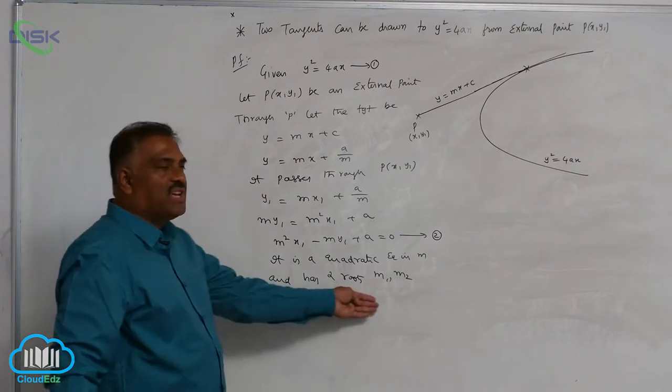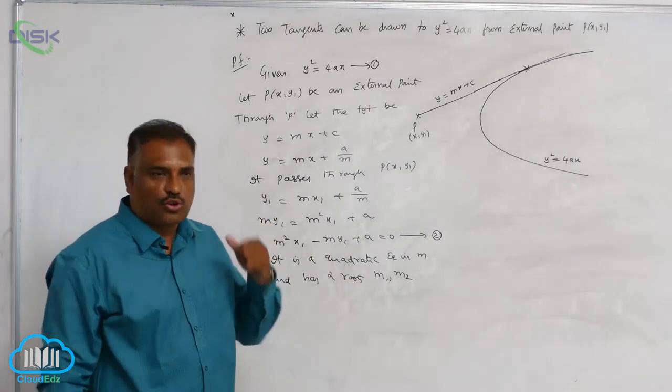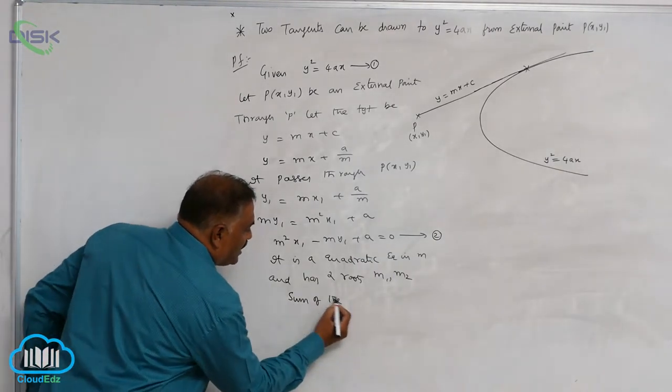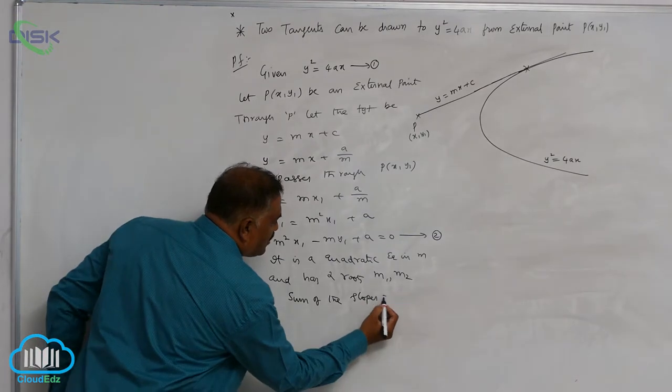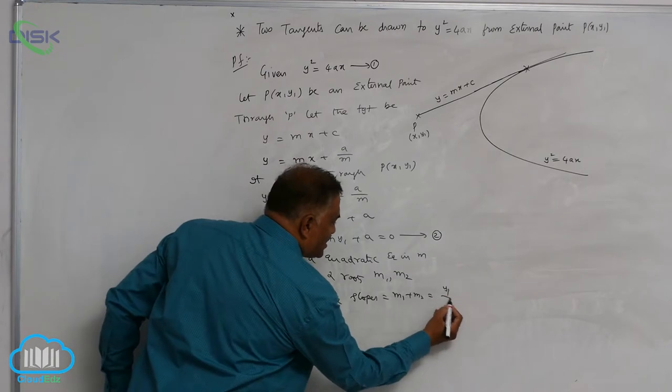When two roots are given to you, you can find out sum of the slopes and product of the slopes also. So sum of the slopes, m1 plus m2, is equal to y1 by x1.